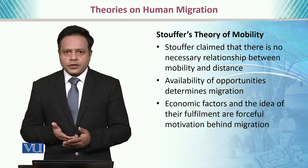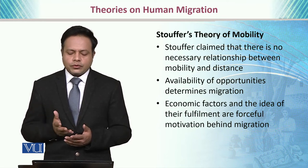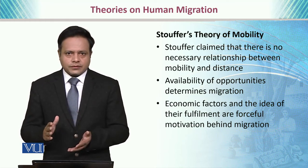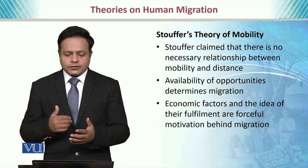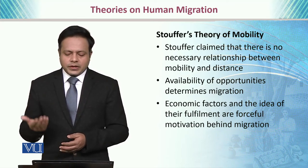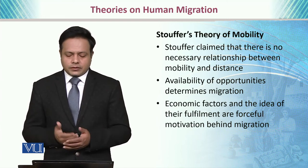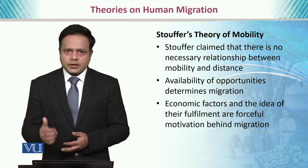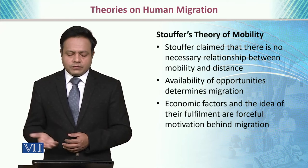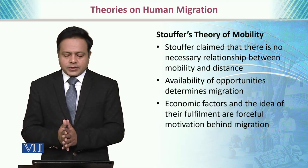Stouffer's theory of mobility suggests that there is no necessary relationship between mobility and distance — he agrees that distance and mobility are inversely related. The availability of opportunities actually determines migration. Where you find more opportunities, you tend to migrate, and economic factors and the ideas of their fulfillment are very forceful motivations behind migration.